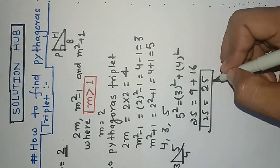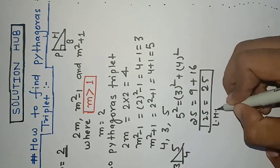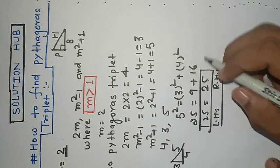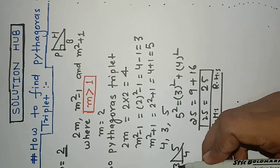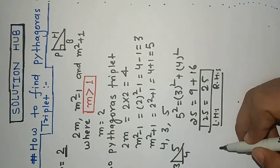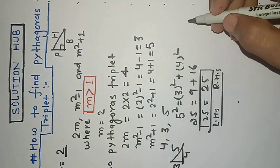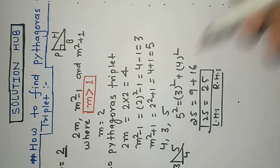Here we can say that LHS is equal to RHS. So we know the Pythagorean theorem: hypotenuse squared is always equal to the square of base and perpendicular. It means that we can select the triplet for m equal to 2.